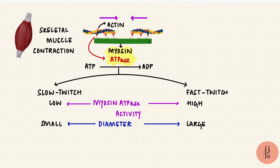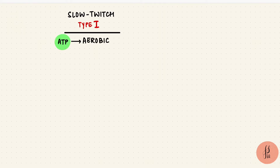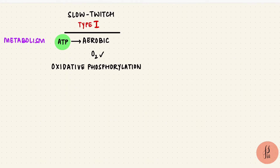But where does this ATP come from? In the slow twitch fibers, which are also called the type 1 fibers, ATP comes from aerobic metabolism — that means it uses oxygen. This is by oxidative phosphorylation. These fibers are called the oxidative fibers.